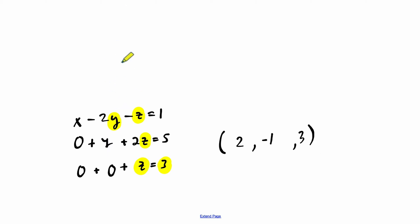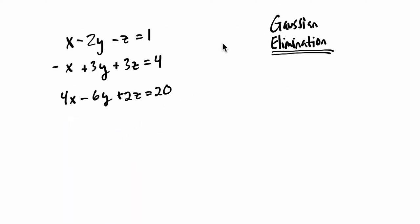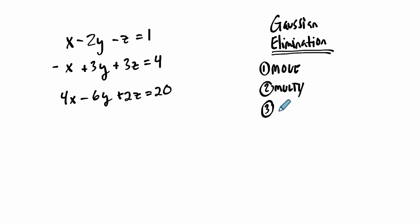The order we're going to use: we'll start in this spot, make sure we have a 1 there, then use that to zero these two spots out. Then we go up to the next spot, and if that's a 1 — if it's not, I'll teach you how to manipulate it — you can use that value to get a 0 in this spot and then you're done. Gauss realized three things: you can move equations around without changing the answer; you can multiply any equation by a non-zero value; and you can combine equations together and replace equations without altering the solution.